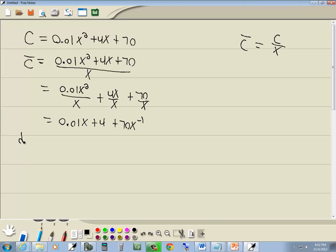Which gives us 0.01x plus 4 plus 70x to the negative 1. Now we'll find our derivative with respect to x. So 0.01x just becomes 0.01, four drops away, plus 70 - take your power, put it out in front, lower it by 1.